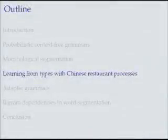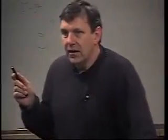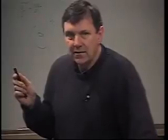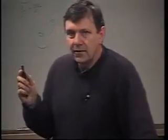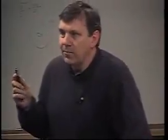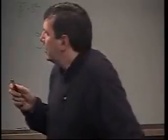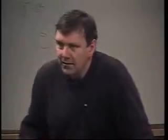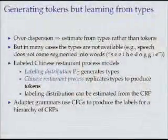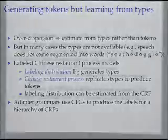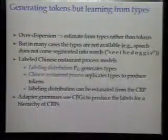I've argued that by down-weighting frequency variation — estimating from types rather than tokens — that's one component towards getting these PCFG learners to work better. This is the over-dispersion problem. One way of dealing with it is to do estimation from types rather than tokens, but in many cases the types really aren't available.